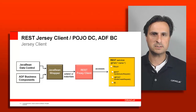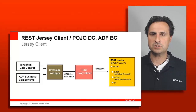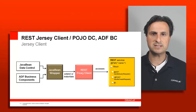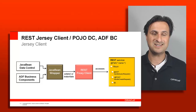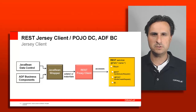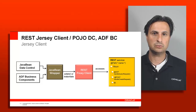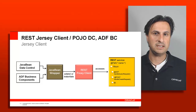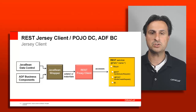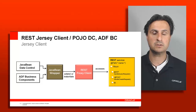As for best practices: upgrade to JDeveloper 12c if you can, because the JAX-RS client libraries and Jersey libraries are bundled, and you get extensive declarative support for both creating and consuming JAX-RS services, including the RESTful data control. If you're not yet able to upgrade to 12c, download the Jersey library from the Jersey website and use the approach shown in the architecture diagram.